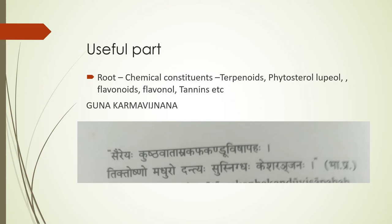Tiktoshno madhurat dandiya, susnigdha kesharanjana. So Sahajara is a sachedravya which is tikta but has ushna virya. Anurasa is madhurya. Gunas are laghu and snigdha. Properties include rogagna karmas and doshatna karmas — it is Kabha hara.